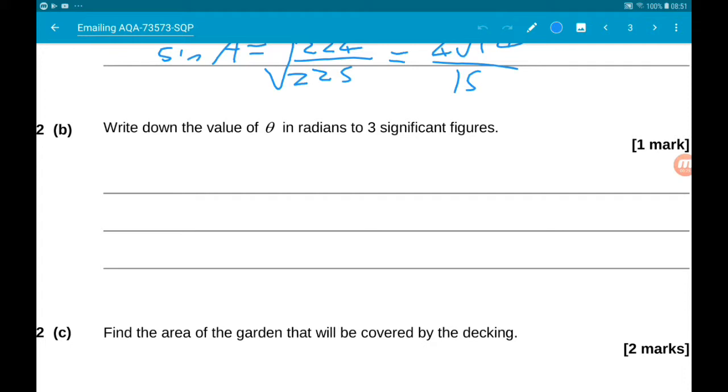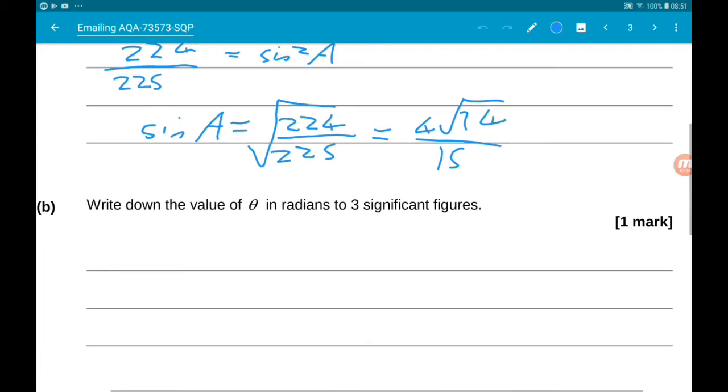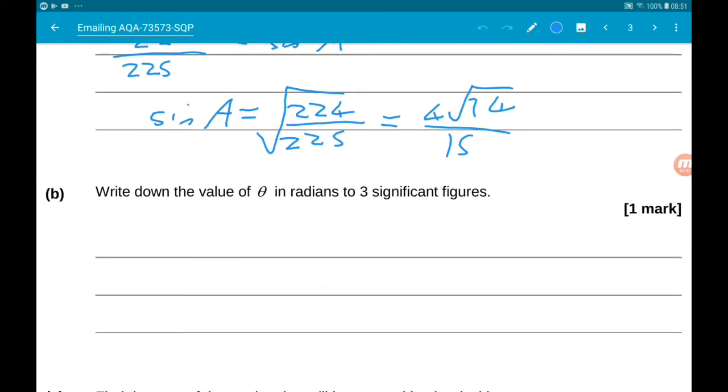So we've just worked out that sine of theta is 4 root 14 over 15. So of course we're now thinking, theta is the inverse sine of 4 root 14 over 15. Now if we do that in radians we get 1.502 to 3 sig figs.